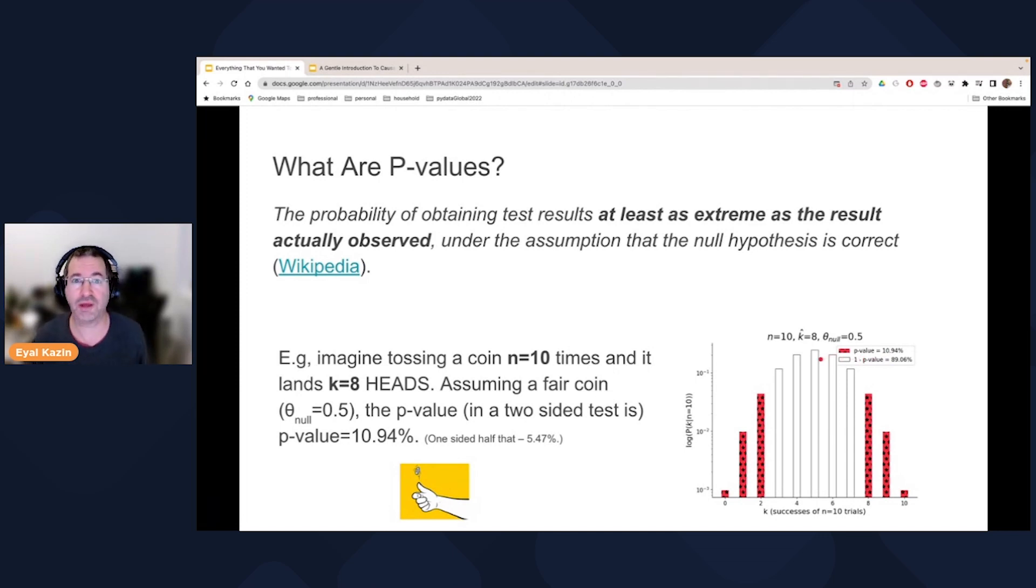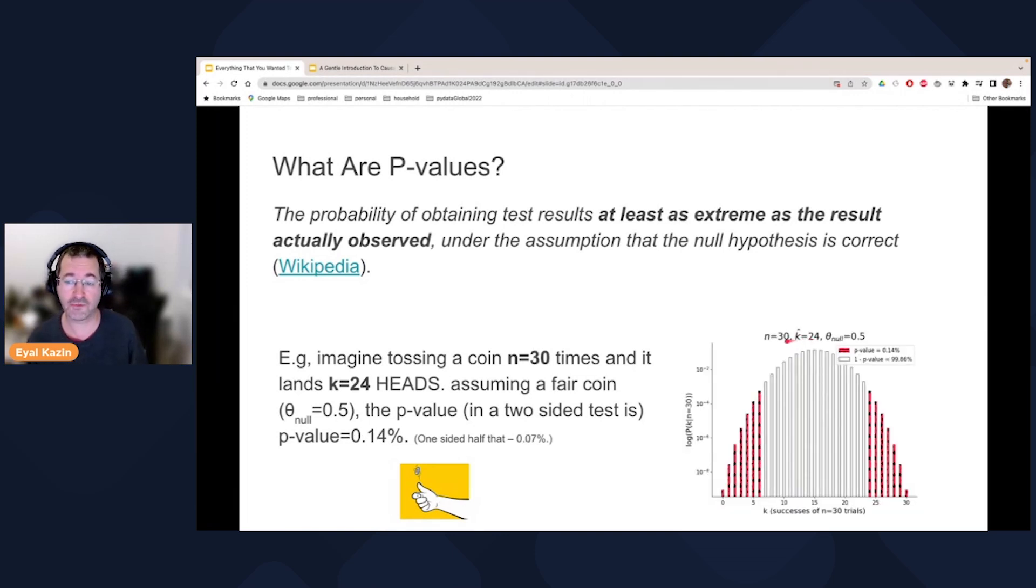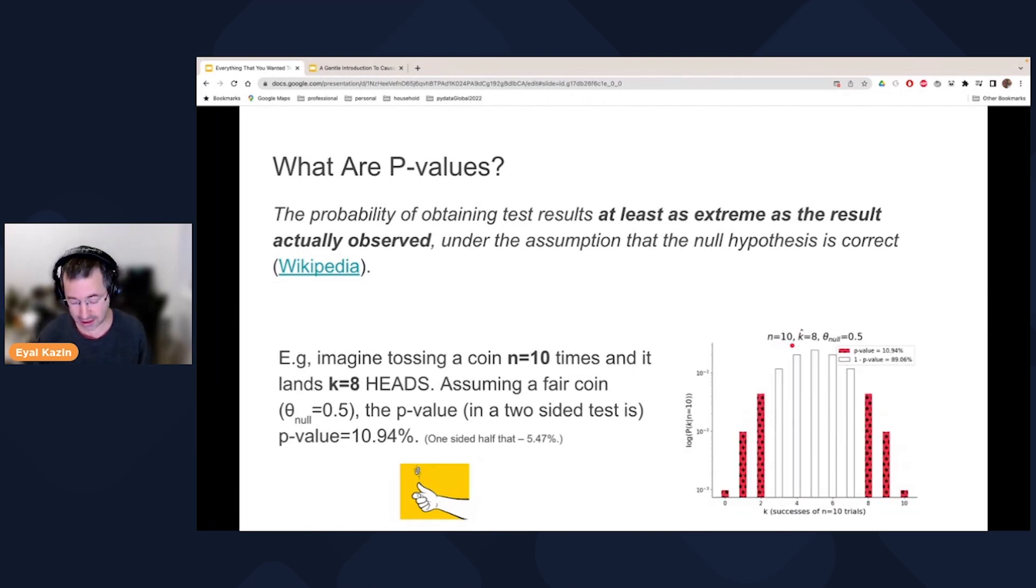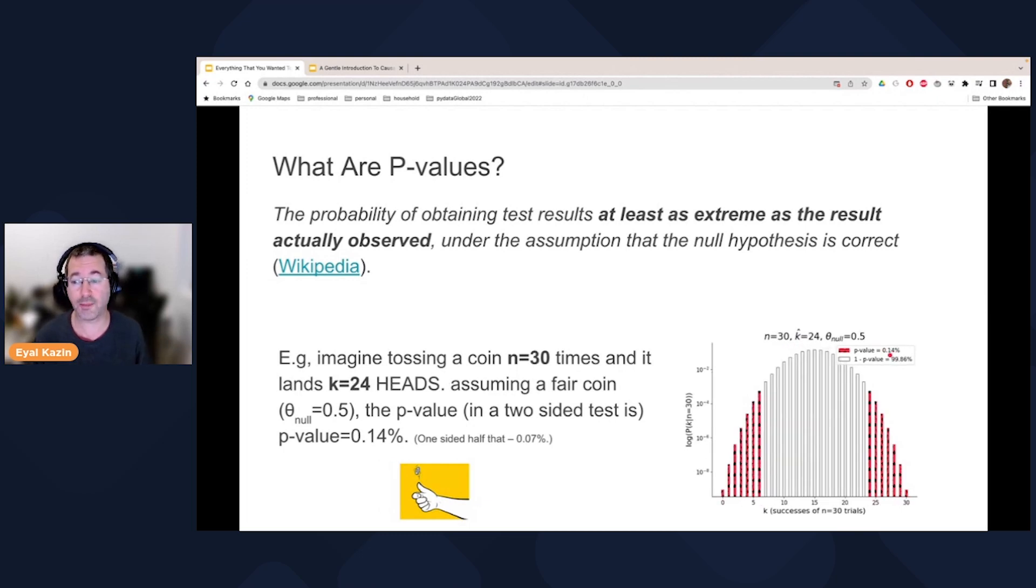What you normally want to do, if you can budget for it, you want to collect more data. So this is just a simulation. So we can obviously do that. So multiply this both times three. So let's do everything times three. And we have the same ratio, 24 divided by 30 is the same as eight divided by 10. But the p-value actually goes down by two orders of magnitude from 11% to 0.14%. That means if we have a fair coin, the probability of getting 24 heads given 30 tosses is much more extreme. And that gives us much more confidence to reject the null hypothesis.